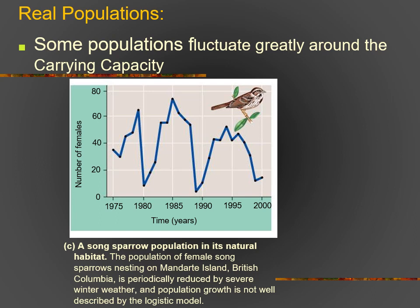But when you look at something like this — a song sparrow in its natural habitat — this thing is fluctuating all over the place. If you try to estimate a carrying capacity, you might say it's about 35, but that's really more of a guess. It's bouncing around due to fluctuations in resources or predation. It tells you right here: winter weather is affecting these populations — sometimes winters are harder, sometimes they're not — so the population fluctuates and cycles depending on environmental conditions.